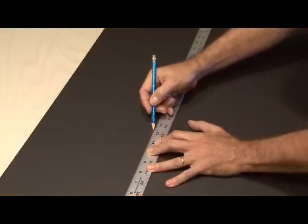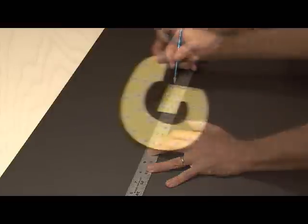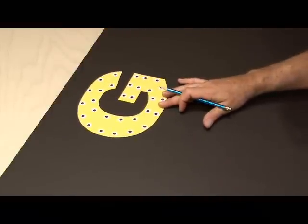I used a hole punch for where each LED would go on the letters. Then laying out the 3/16 inch foam core and using a ruler, I centered up the letters where they would go on the foam core.